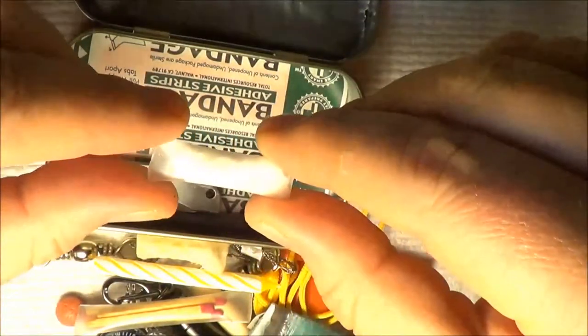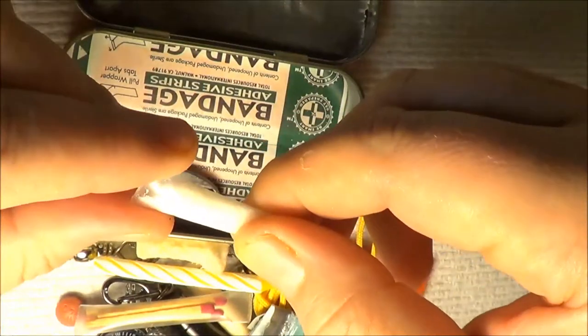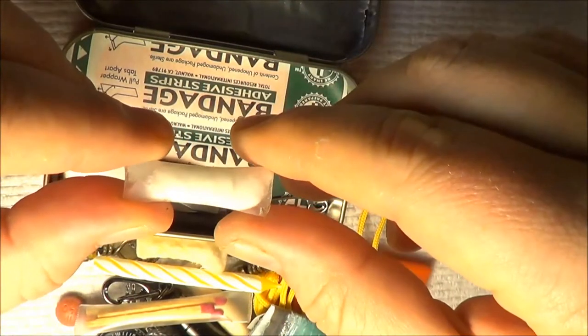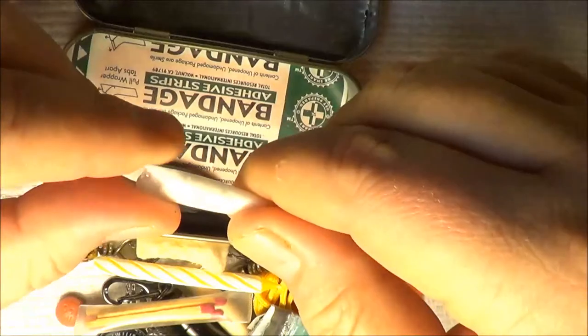This is cotton soaked in vaseline which is inside of a straw which remains waterproof. You can also use this for fire starting.